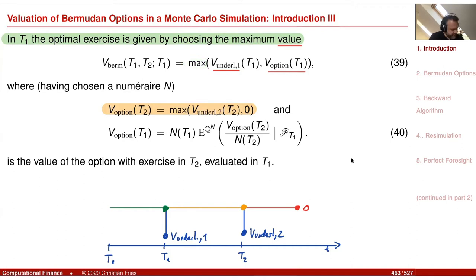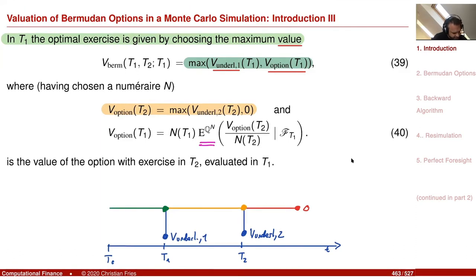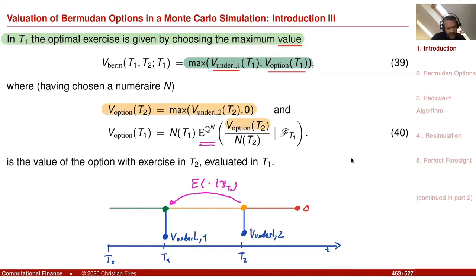For the orange dot the optimal exercise strategy is clear: take the maximum of underlying and zero. For the green dot — the Bermudan decision — you either choose underlying one or the future option. The problem is that you decide between the value of the option. To make this decision you have to calculate a conditional expectation: you know the option value at T2 but need to know its value at T1.